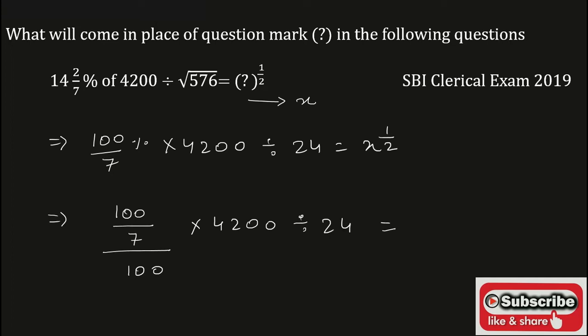This can be written as square root of x. Now the 100s cancel. 7 goes into 7 once, giving 600. 600 divided by 24 equals square root of x.